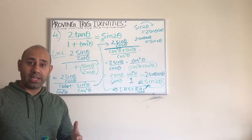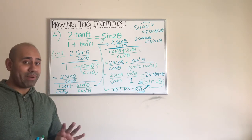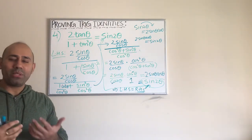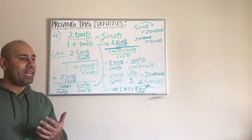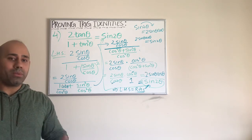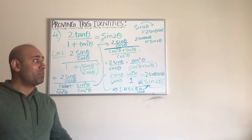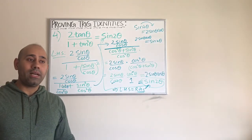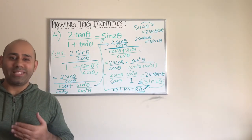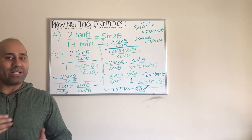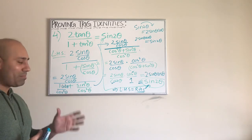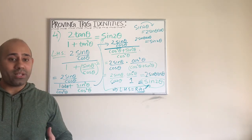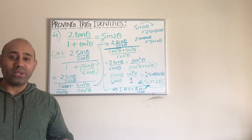Number four is done! Keep practicing these things — look at them carefully, look at the steps, look at the commonalities, and always have the formula sheet ready. I promise you, if you look at these examples carefully and try to understand the thought processes, you will get really good at these and be able to do a lot of them. See you next time with number five.